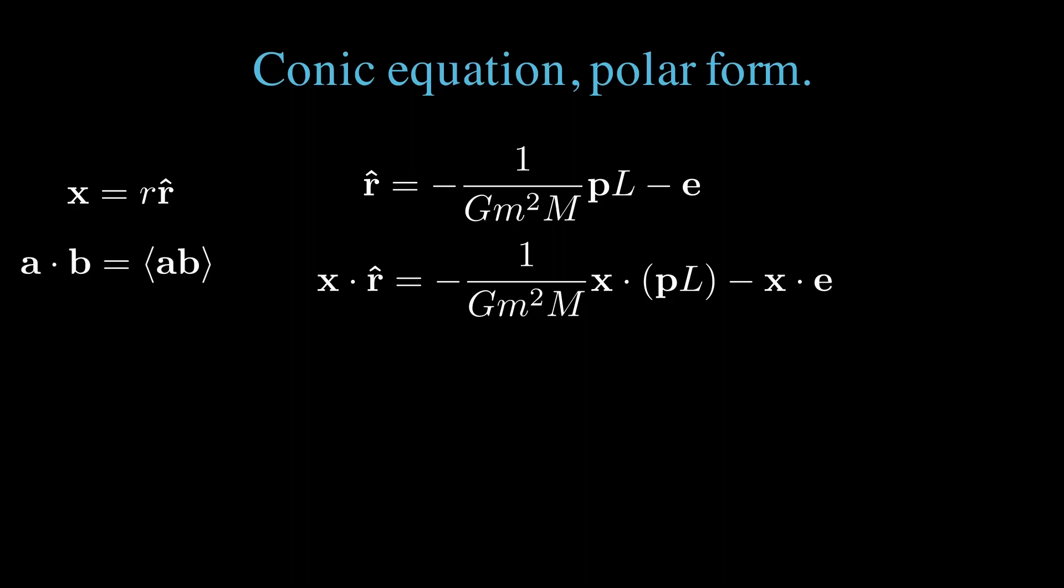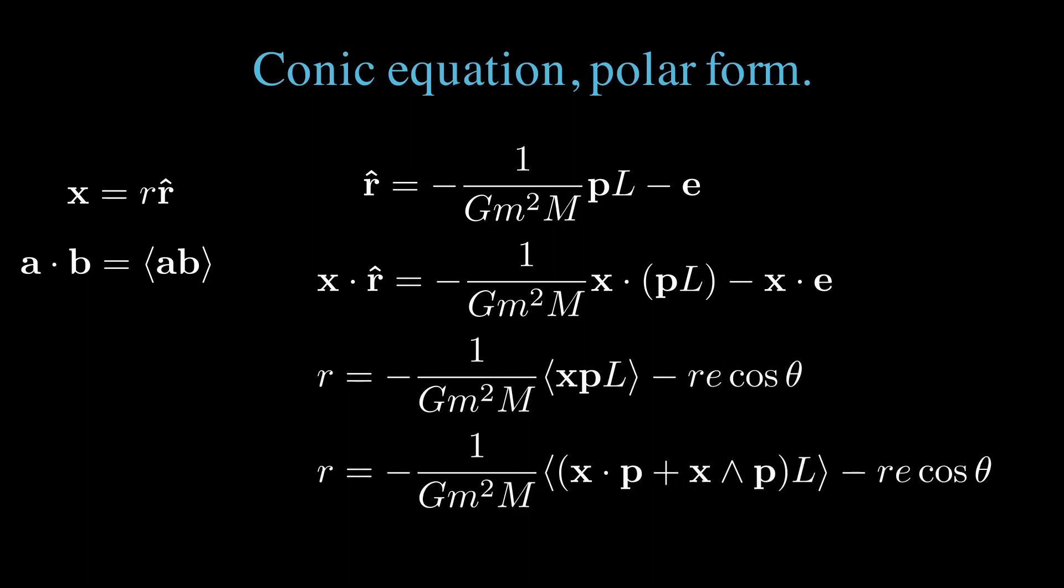We'll write that x dotted with p l as the grade zero selection. A dot b is a grade zero selection of the product of a b. This allows us to associate the xp product, writing out xp equals x dot p plus x wedge p.